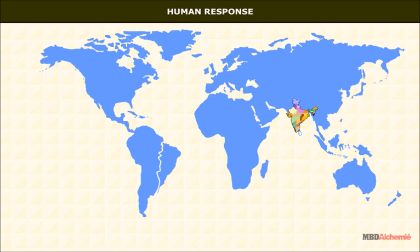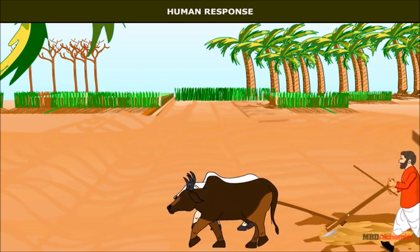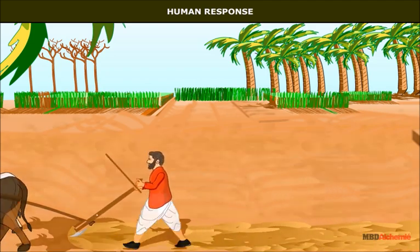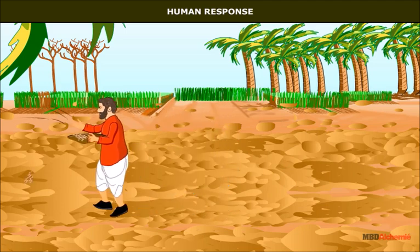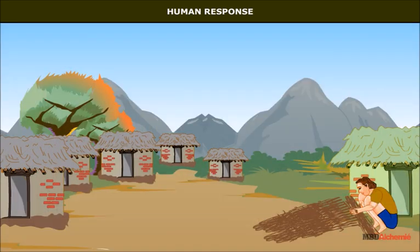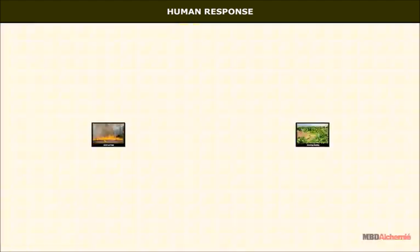The Amazon basin is mostly inhabited by tribal people. They practice subsistence and shifting agriculture and still depend on forest food. In subsistence agriculture, farmers produce barely enough for their own use. The shifting agriculture in India is called Jhuming and is practiced in some northeastern states. The farmers clear a piece of land by cutting down trees.